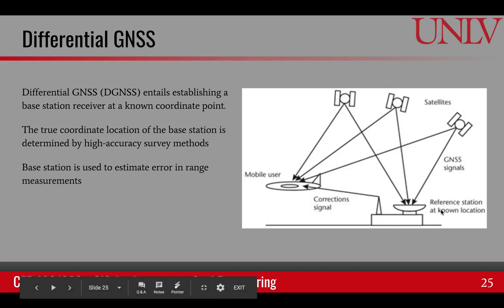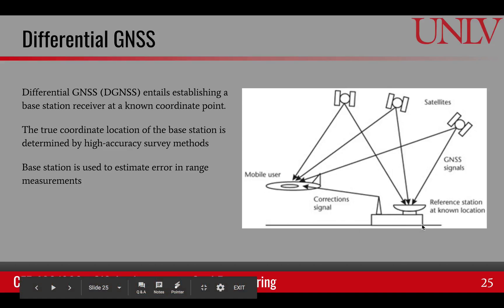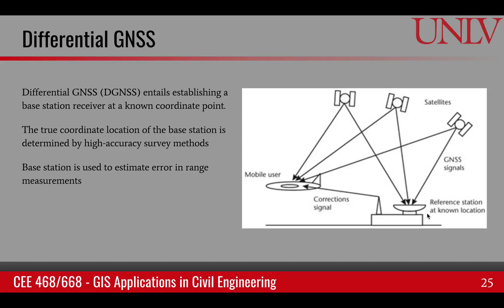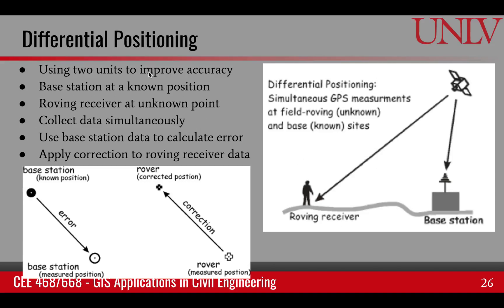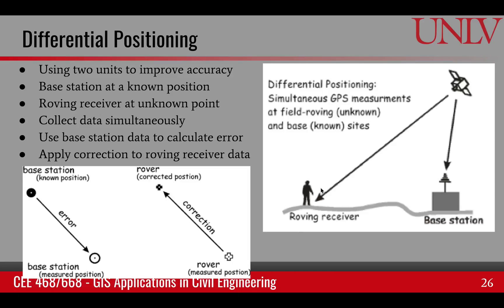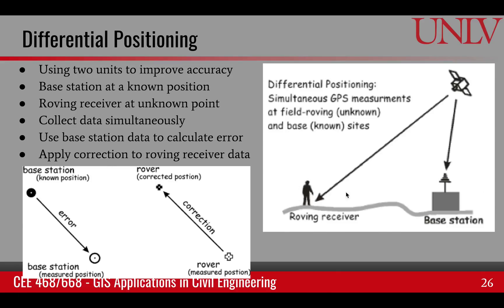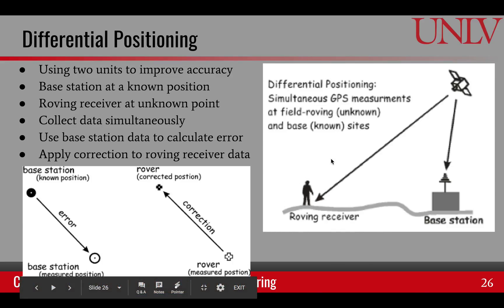In general, we have our satellite system and our receiver. But in the case of DGNSS, we add a reference station where we know the location. This is also called differential positioning. We have the broadcasted signal from satellites, a base station with known location, and the mobile station is called a rover or roving receiver. By using these two receiving systems, we end up improving the accuracy of our roving receiver.